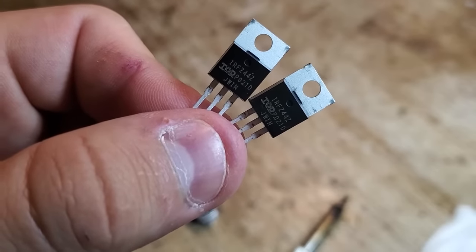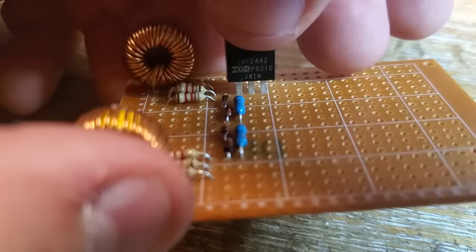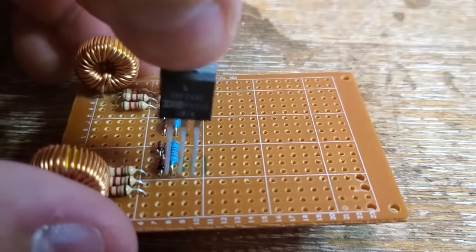The MOSFETs are IRF-44s. These are cheap and plentiful but their drain to source voltage rating means I can only feed this circuit with about 16 volts maximum.